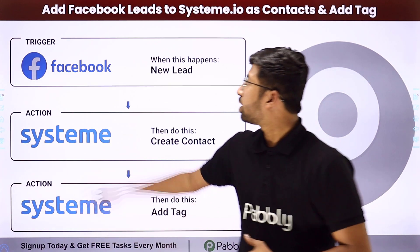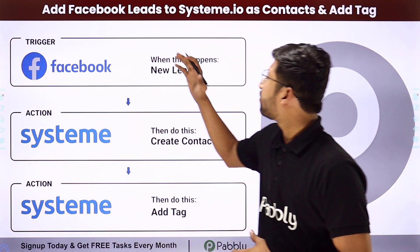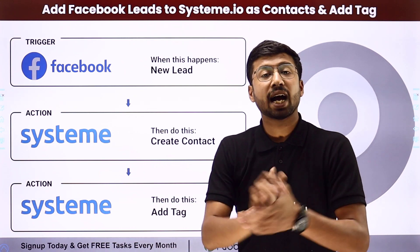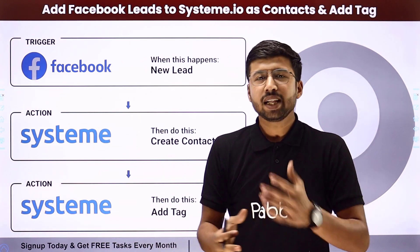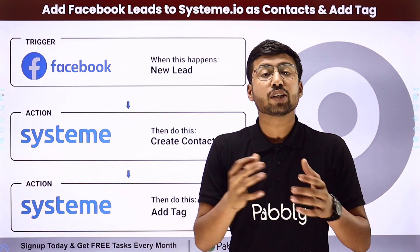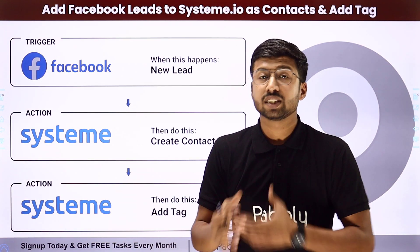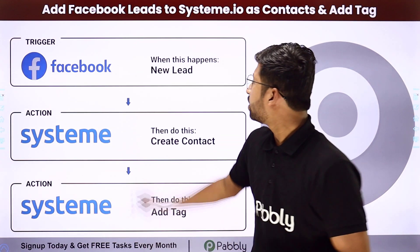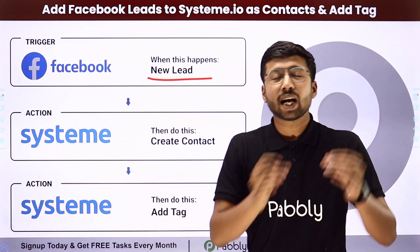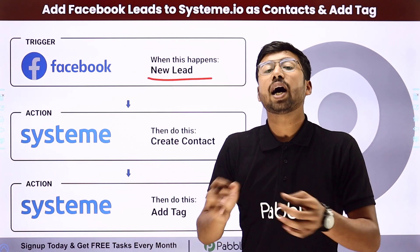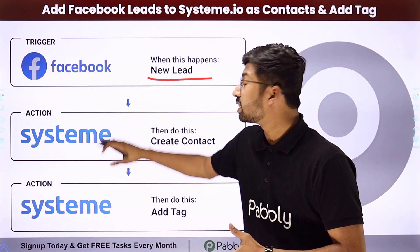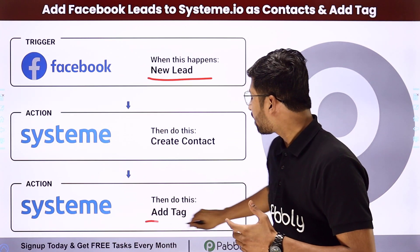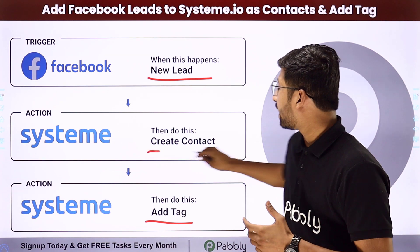In this video, we are going to learn how to add Facebook leads to Systeme.io as a contact and add a tag. Let's say you are running some Facebook lead ads to market your business and generate some leads, and you want that whenever a new lead is generated in Facebook lead ads, you want to add that same lead as a contact in Systeme.io and also apply a tag to that contact.